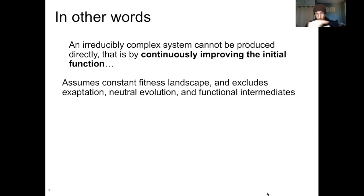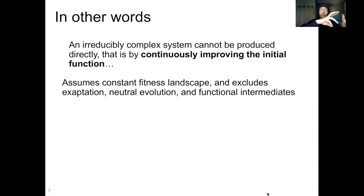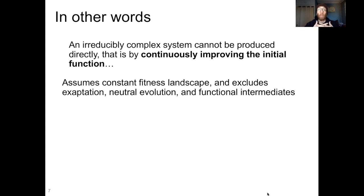Right here in this sentence, we're also excluding exaptation, because he's saying we have to continuously improve the initial function. We know there are biological systems that can appear via exaptation, which is where a structure does one thing and then is co-opted to do a different thing. I love the example of feathers for this, where feathers were initially for thermoregulation, and only later did they start being utilized for flight.